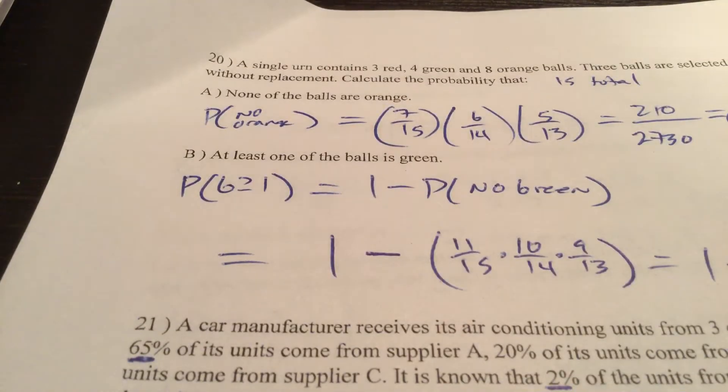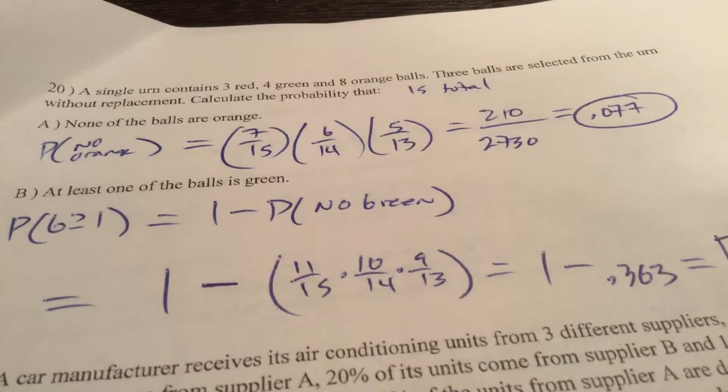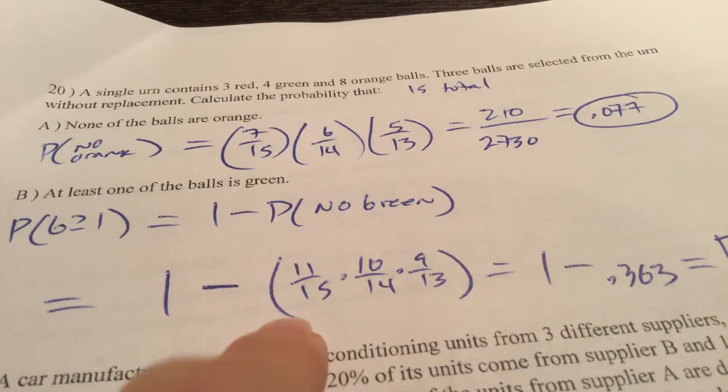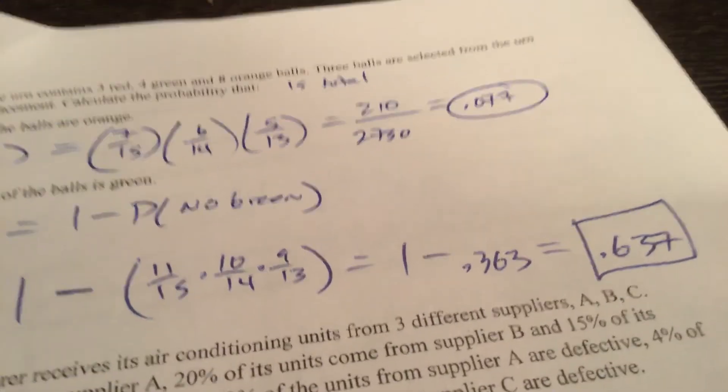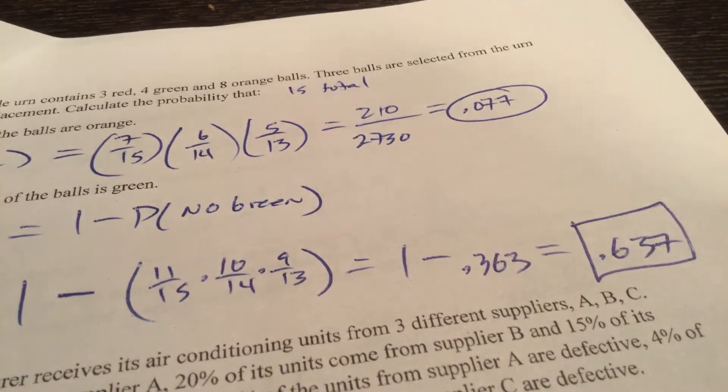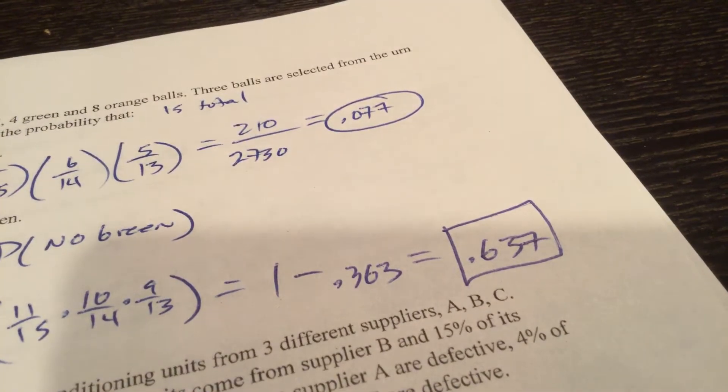What's the probability at least one of the balls is green? So probability green greater than or equal to 1 would be 1 minus the probability of not getting any green. 4 are green. So 11 out of the 15 aren't. 10 out of 14 aren't. 9 out of the 13 aren't. The probability of getting no green is 363. 1 minus that would be 637.